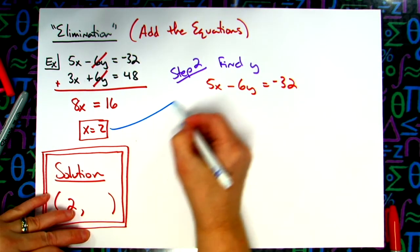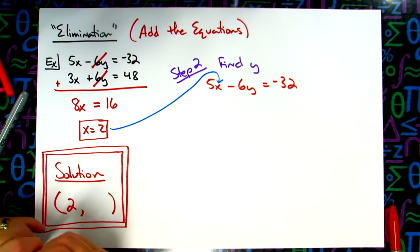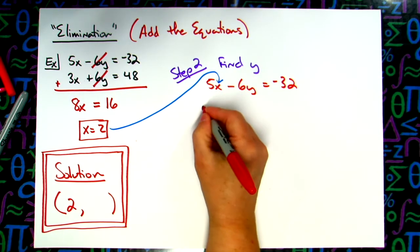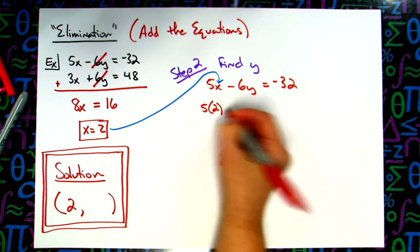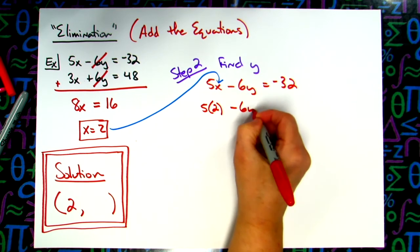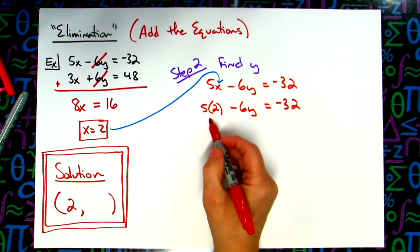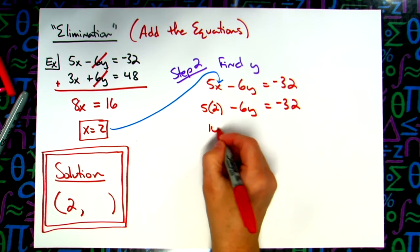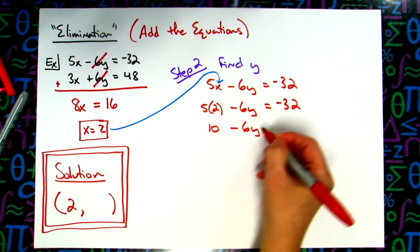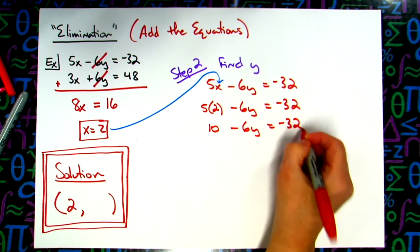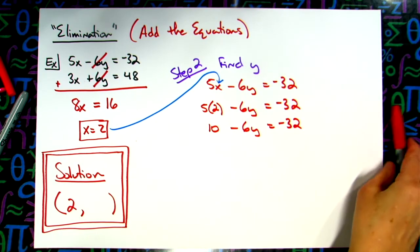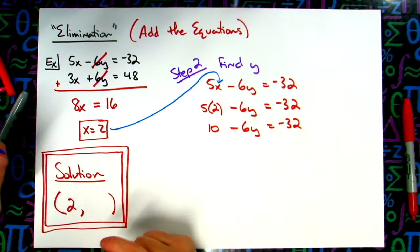So I'm going to do the 5x minus 6y equals negative 32. I know what my x value is. My x value is 2, so I'm going to put that in there and work this out. So I'm going to have 5 times 2 minus 6y equals negative 32. So 5 times 2 is 10 minus 6y equals negative 32.